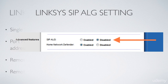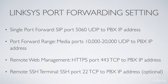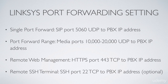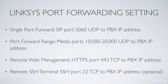The next settings we'll need to adjust are the port forwarding settings. We need to forward port 5060 UDP to the PBX appliance — that's for all of our SIP traffic, which is the signaling for Voice over IP. We also need to forward the port range of 10,000 through 20,000 UDP, which are our media ports — the audio stream for the phone call.